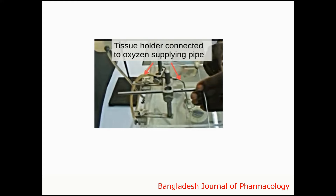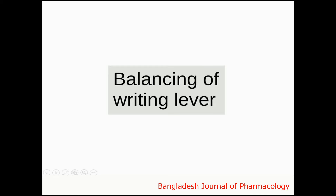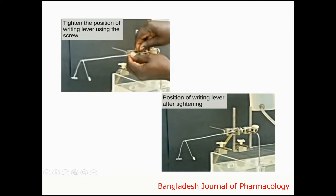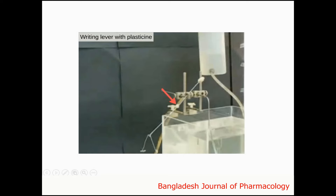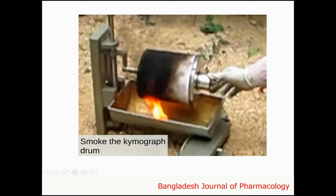The tissue holder is connected to the oxygen supplying pipe. Balancing of the writing lever is done by tightening the position of the writing lever using the screw. Position the writing lever after tightening, then attach the plasticine to the writing lever. Smoke the chymograph drum.